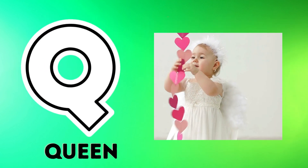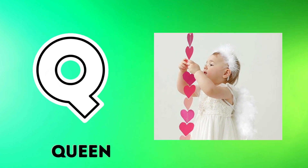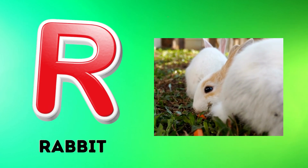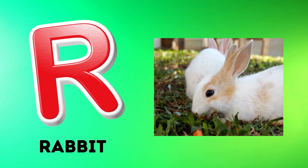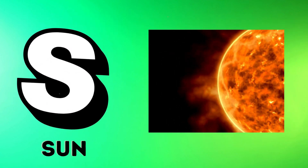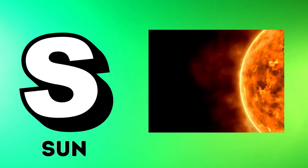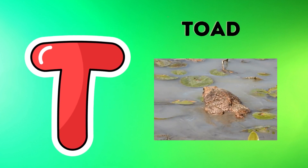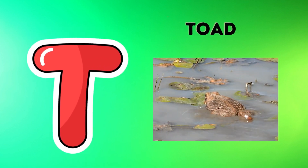Q is for queen, qu-qu-queen. R is for rabbit, r-r-rabbit. S is for sun, s-s-sun. T is for toad, t-t-toad.